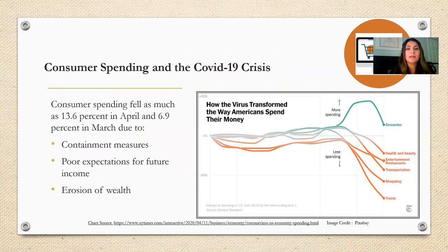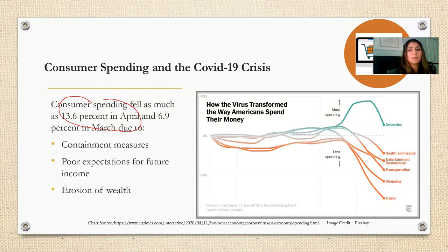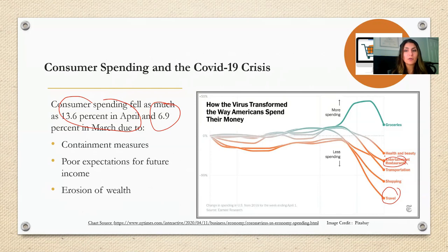Economists pay close attention to consumer spending and consumer confidence, since this spending constitutes almost 70% of the GDP. If consumers are confident in their future earnings, their confidence will impact their economic decisions, including their spending activity. Due to containment measures after the COVID-19 outbreak and uncertainty in future incomes, consumer spending fell as much as 13.6% in April and 6.9% in March. While retail, travel, and restaurant industries suffered the most decline, general merchandise and grocery spending increased significantly.